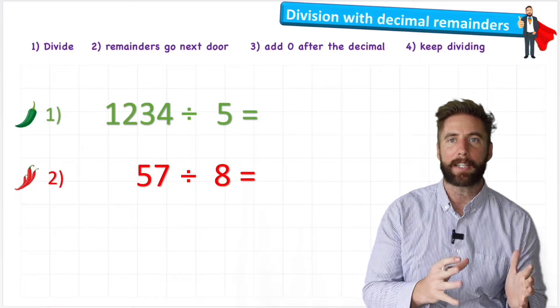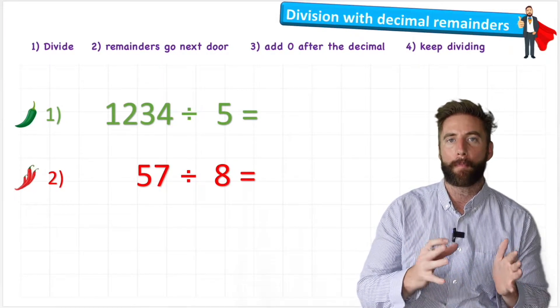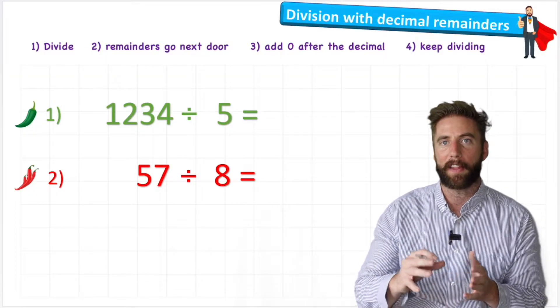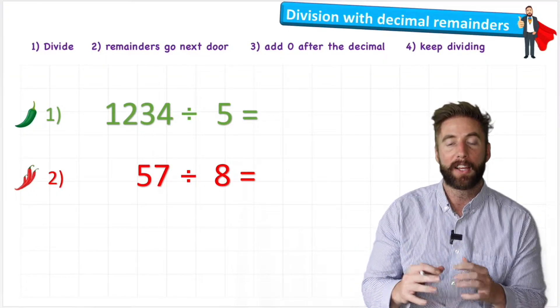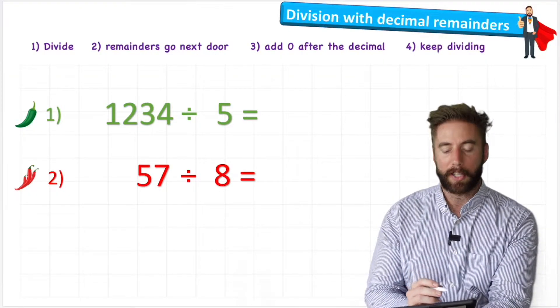So getting a decimal remainder is kind of an advanced skill and one past just putting the remainder sign and then the amount that you've got remaining. So let's see how we do that. Let's have a look at our steps.